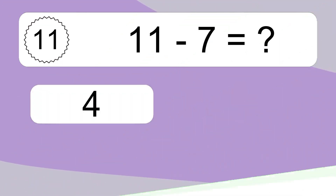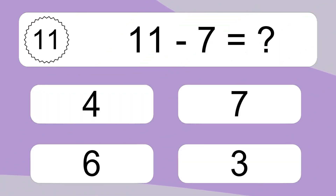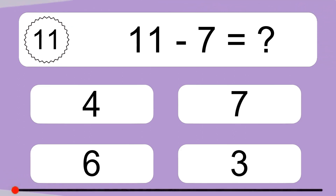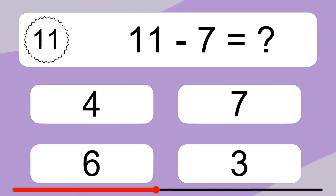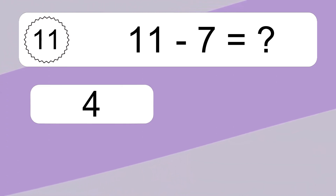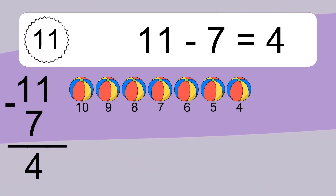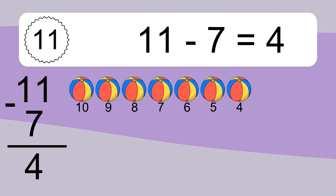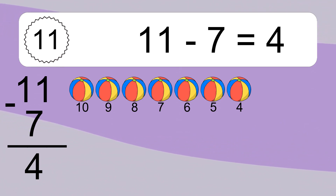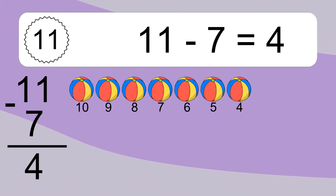11 minus 7 equals what? 11 minus 7 equals 4. Let's count it. 10, 9, 8, 7, 6, 5, 4.